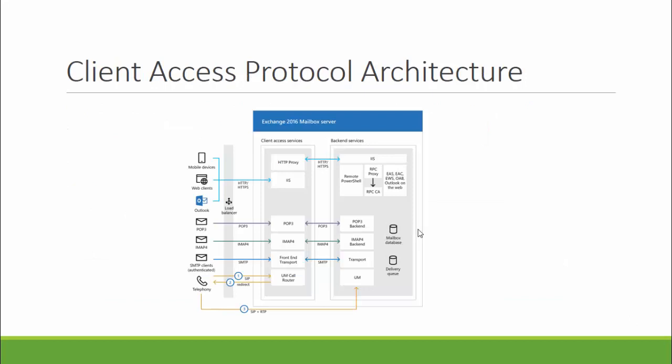Next is client access protocol architecture. Client access service on Exchange 2016 mailbox servers is responsible for accepting all forms of client connections — such as OWA, mobile devices, or Outlook. The client access service proxies these client connections to the backend service on the destination mailbox server, which may be a local or remote server holding the active copy of the user's mailbox. As shown in the picture, clients do not communicate directly with backend services. The protocol used by the client determines the protocol used to proxy the request to backend services — for example, if the client connects using HTTP, the mailbox server uses HTTP to proxy the request; if the client uses IMAP or POP, then IMAP or POP is used to the backend service.